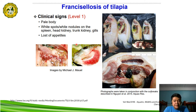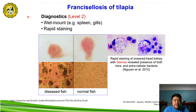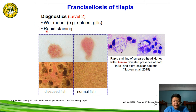These are images of tilapia infected with francisellosis, showing the presence of white nodules on different organs. For level 2 diagnostics, these include wet mount using the spleen and gills as specimens, and rapid staining. The wet mount compares a fish infected with francisellosis and a normal fish. Rapid staining of smeared head kidney with Giemsa stain revealed the presence of both intra- and extracellular bacteria.